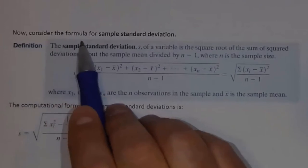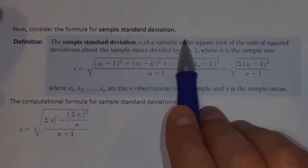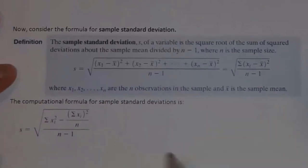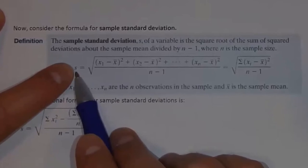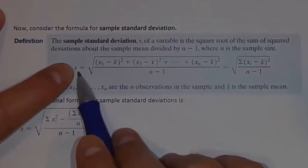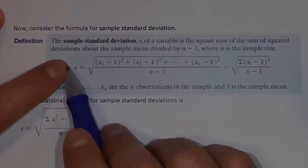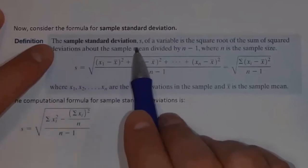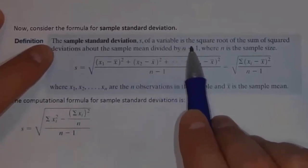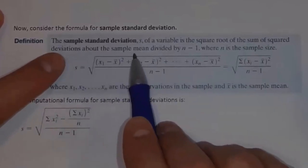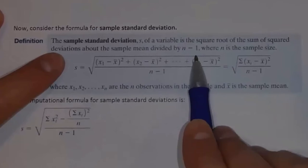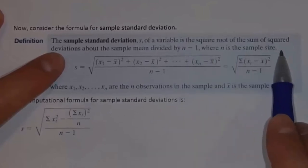Now consider the formula for sample standard deviation instead of population standard deviation. We're going to denote sample standard deviation by the letter S. So a lowercase sigma for population standard deviation is a parameter, and S for sample standard deviation is a statistic. The sample standard deviation S of a variable is the square root of the sum of the squared deviations about the sample mean divided by n minus 1, where n is the sample size.